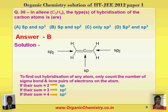The next question is: in allene C3H4, the type of hybridization of the carbon atoms is? To find the hybridization of any atom, count the number of sigma bonds and lone pairs of electrons. If their sum is 2, hybridization is SP; if 3, it is SP2; and if 4, it is SP3. For the first carbon: 1, 2, and 3 sigma bonds — SP2. The middle carbon has 1 and 2 sigma bonds — SP2. The last carbon also has 3 sigma — SP2. There is no role of pi bonds in counting hybridization.